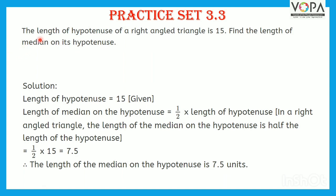Question 2: The length of the hypotenuse of a right angle triangle is 15. Find the length of the median on its hypotenuse. Solution: Length of hypotenuse is equal to 15. Therefore, the length of the median on the hypotenuse is equal to one half of the length of the hypotenuse — in a right angle triangle, the median on the hypotenuse is half the hypotenuse. Therefore, it is equal to one half of 15, that is 7.5 units.